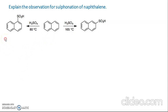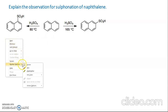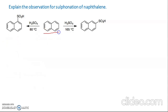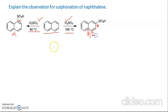The first problem is: explain the observation for sulfonation of naphthalene. The starting material undergoes sulfonation using H2SO4 under two different conditions — one at 80°C and another at higher temperature. At higher temperature we get the beta acid, and at low temperature we get the alpha acid. The alpha position is position 1 and the beta position is position 2. We have to explain this difference.